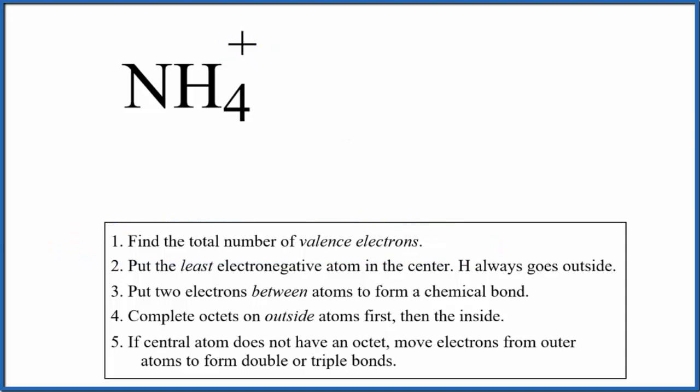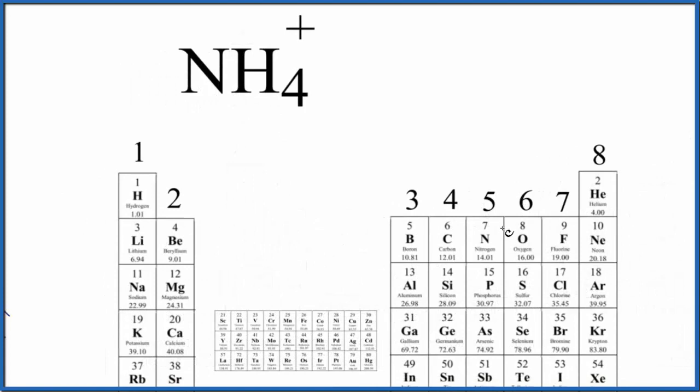So if we go to the periodic table, we can see nitrogen right here, group 15, sometimes called 5A, 5 valence electrons. Hydrogen, that's in group 1. All of these have 1 valence electron.